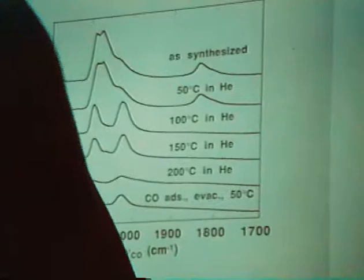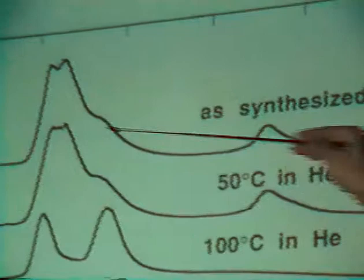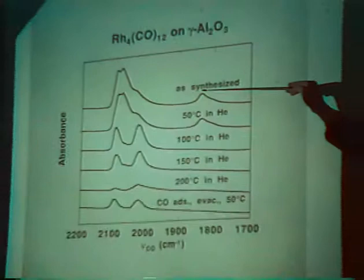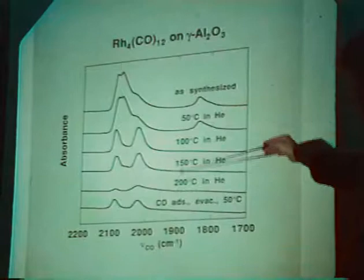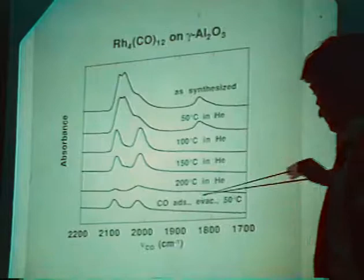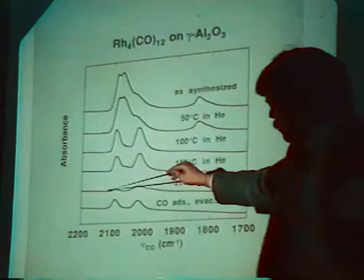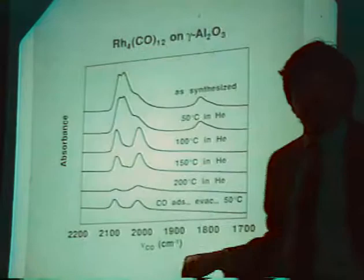Looking at the chemistry of rhodium-4 on gamma-alumina: if you put rhodium-4 on gamma-alumina, you get an infrared spectrum assigned to Rh₆(CO)₁₆ — you convert the rhodium-4 cluster to the rhodium-6 cluster on adsorption. Then, as you heat this in helium, you decompose it via the gem-dicarbonyl species. When you re-expose this at 50°C to CO, you get the gem-dicarbonyl bands back, suggestive of a highly dispersed rhodium on alumina catalyst. We also looked at the EXAFS spectra for this system — the as-absorbed rhodium-4 shows strong oscillations at high K.